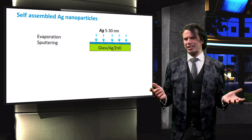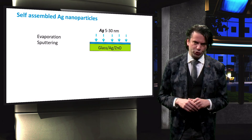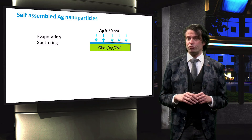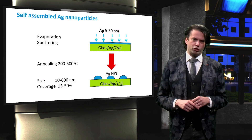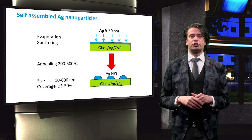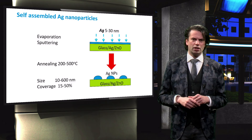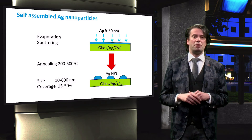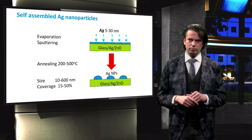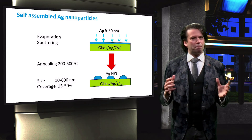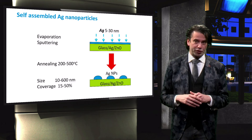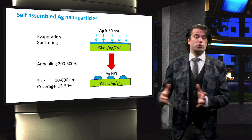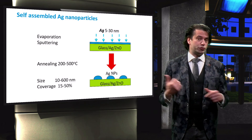For plasmonic scattering, silver nanoparticles are often used. The nanoparticles are fabricated by sputtering a 5 to 30 nm layer of silver on top of a substrate. The substrate and silver layer are then annealed at temperatures between 200 and 500 degrees Celsius. At such temperatures, the nano layer of silver starts to form small clusters, leading to the formation of nanoparticles on the substrate. The temperature and annealing duration are important parameters that influence the size and coverage of the nanoparticles, which can range from 10 up to 600 nm in size and 12 to 50 percent in coverage.